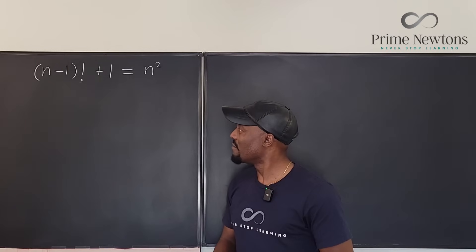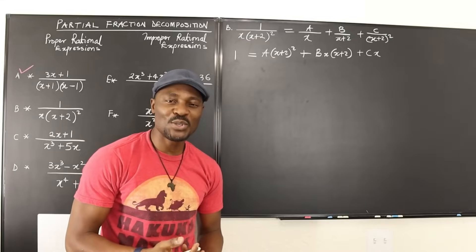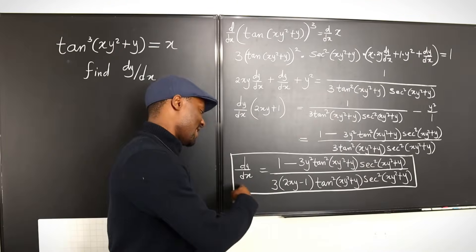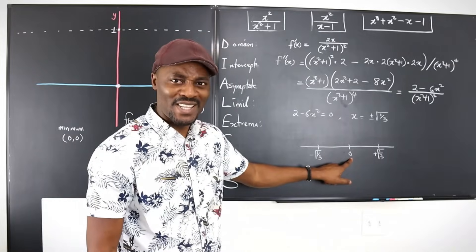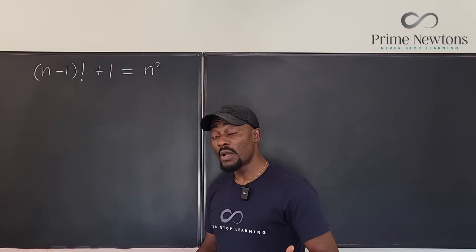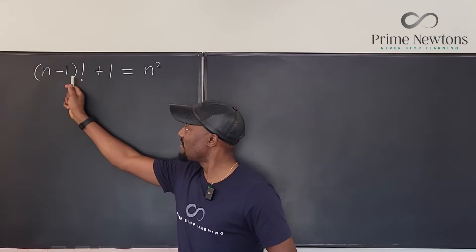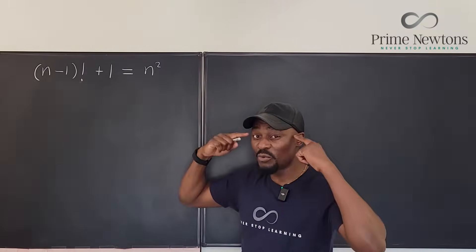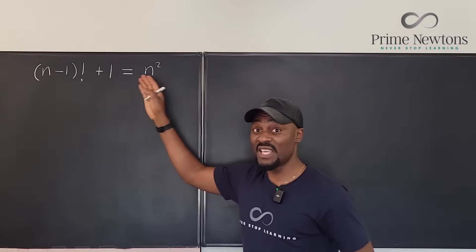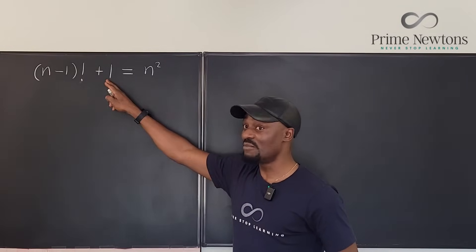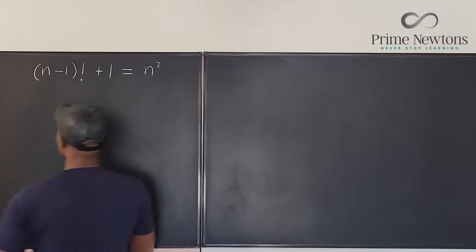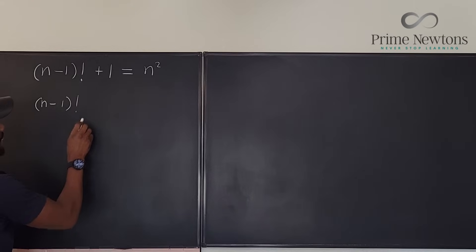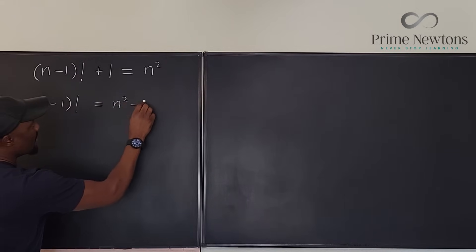So considering the fact that we have (n-1) factorial here, plus 1 on the left, and n² on the right, I can already see (n-1) on the left and I'm seeing (n-1) on the right too if I move the 1 over. So I'm going to say that (n-1) factorial equals n² minus 1.